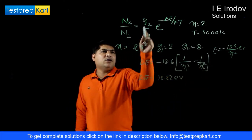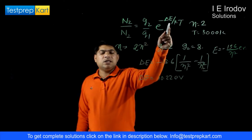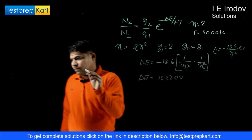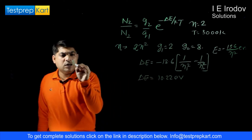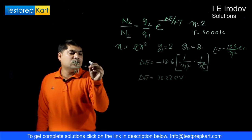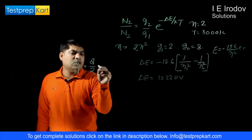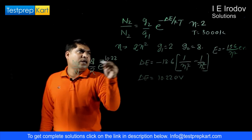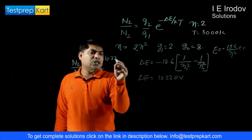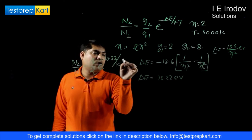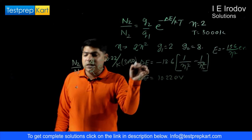In this expression now degeneracies are known, temperature is known, Boltzmann constant is known. So we can substitute here. N2 over N1 equals 8 over 2 times e to the power minus 10.22, the energy difference, over k Boltzmann constant. Now we need to put in terms of electron volt into 3000.